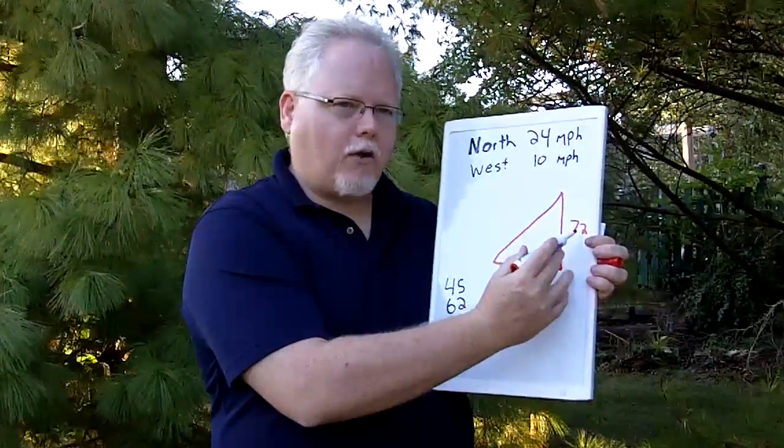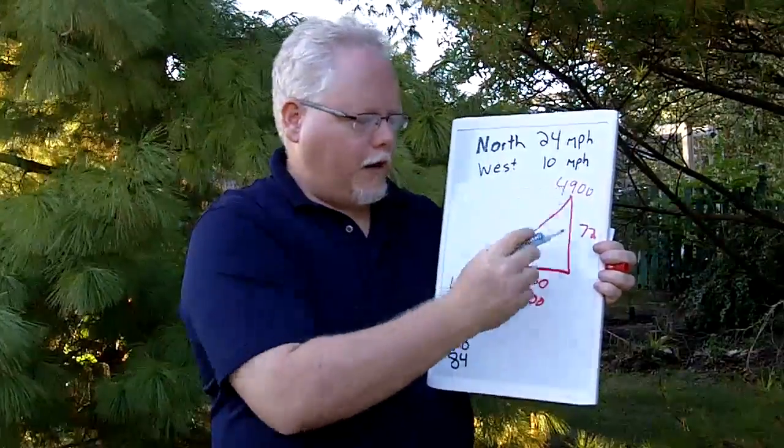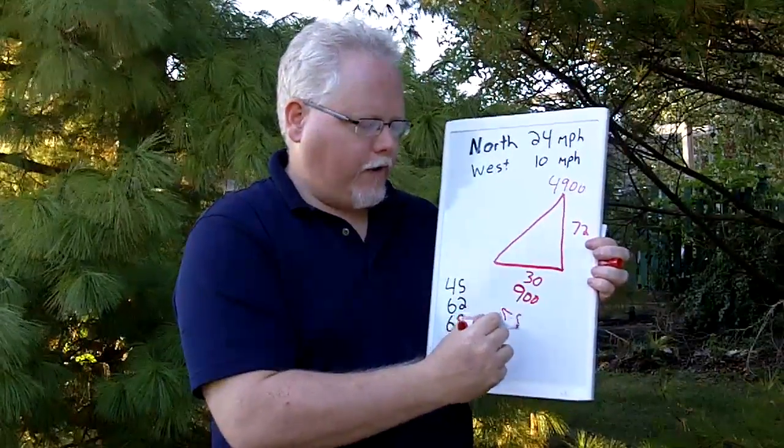70, let's round this down, 70 times 70 is 4,900. So 4,900 plus 900 is 5,800. We rounded down so it would actually be a little bit more than this.